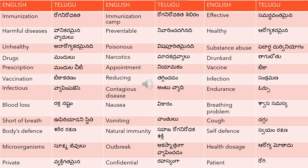Infection is 'sankramana'. Infectious is 'vyaapinchayadi'. Contagious is 'untuvyadi' — something which is spread by touch. Endurance is 'orpu'. Blood loss is 'rakta nashtam'.